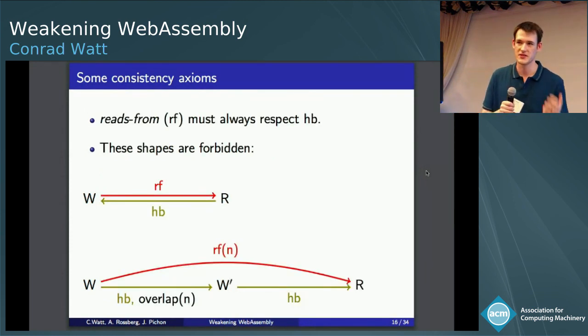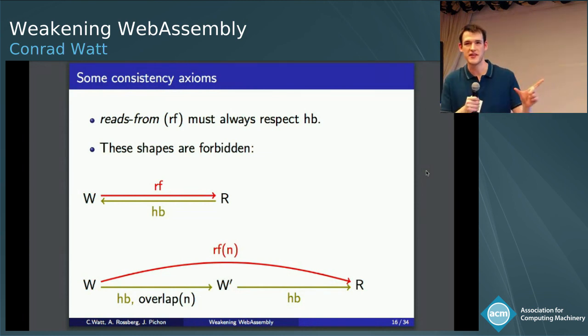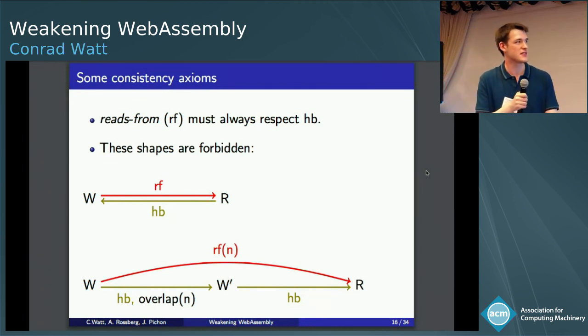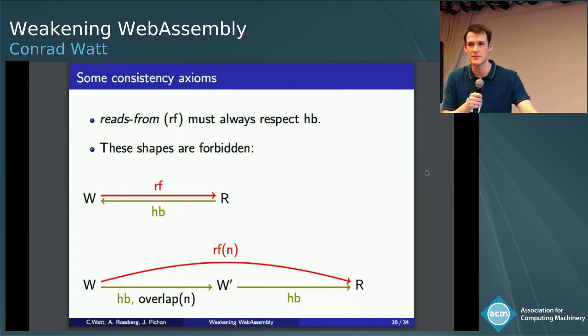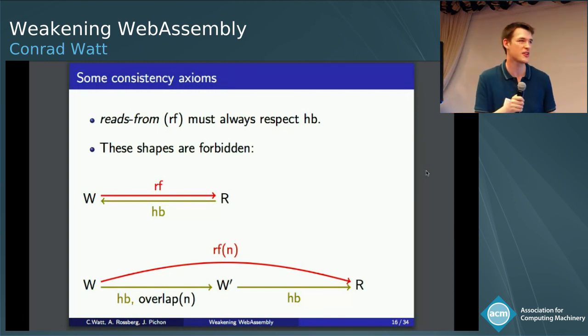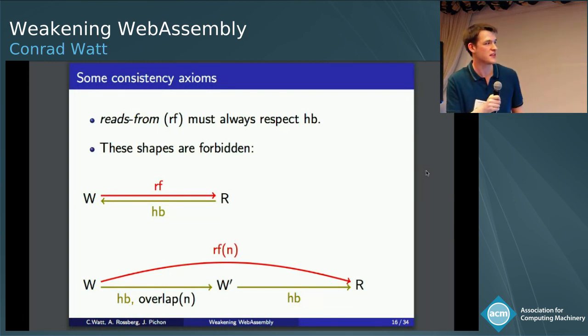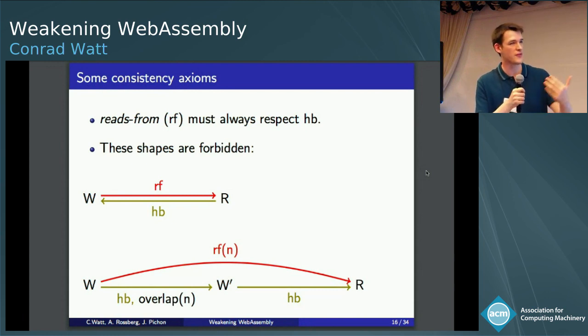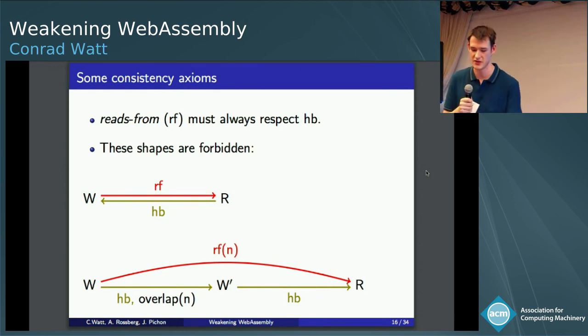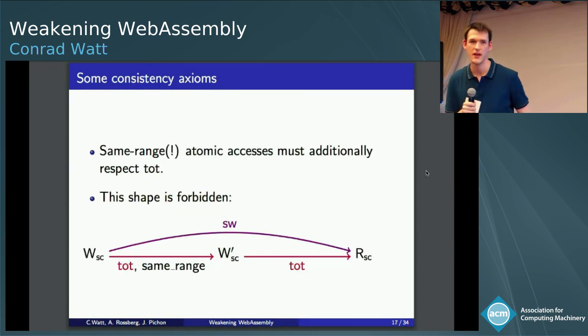So as I said, happens-before is this strong synchronization. And the way this shows up in the model is by saying, you're not allowed to read in a way that's inconsistent with happens-before. This is just very standard from C11. So this shows up in the model as saying, you can't have a reads-from edge going in one direction, and a happens-before edge going in the other direction. And similarly, happens-before says, you're not allowed to read stale values. So this second shape is bite-wise. The older store is writing something at location n. You have a slightly newer store also writing something at location n. And then if all of that is connected by happens-before, the read is not allowed to read that bite from the stale store.